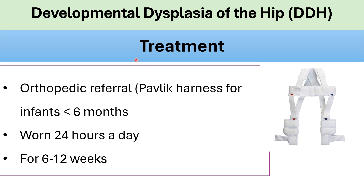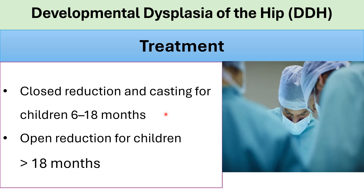Treatment of DDH: orthopedic referral for a Pavlik harness for infants less than six months. The harness is worn 24 hours a day; parents can change diapers while the harness is on. It is worn for six to 12 weeks. Closed reduction and casting for children six to 18 months with DDH. Open reduction for children more than 18 months with DDH.